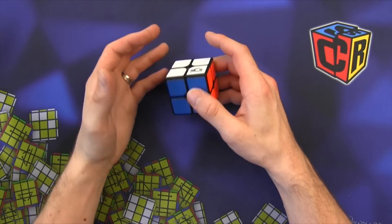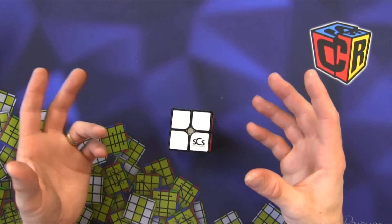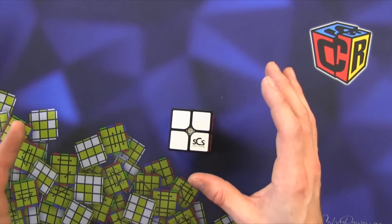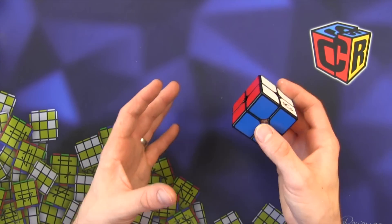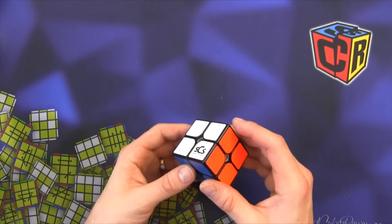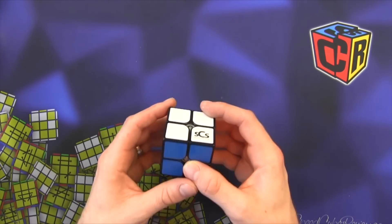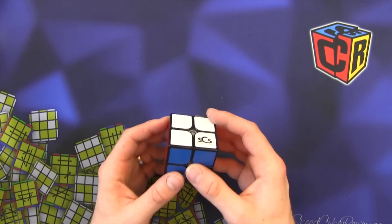What we're going to do is use Old Pochmann method which is how almost every beginner learns 3x3 blindfolded. Another thing to note is that solving it Old Pochmann method doesn't reduce your ability to learn how to solve more advanced methods and doing commutators like in 3 style.